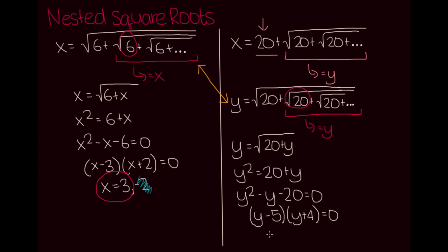This gives us two solutions like last time, y equals 5 and y equals negative 4. We're going to eliminate the negative solution, which is irrelevant, and this leaves us with y is equal to 5 as our solution.